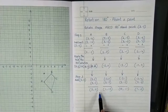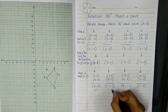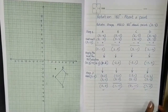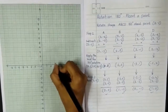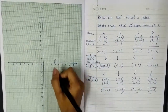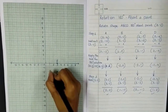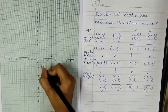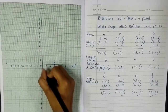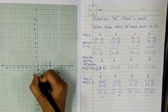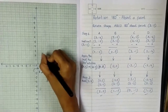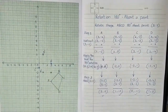Next, I have to plot all these points on a graph and then join them to make my rotated shape. I'll start plotting: (3, 0) is my point A dash; (1, -2) is my point B dash; (0, -1) on the y-axis is my point C dash; and (1, 2) is my point D dash. I'll join all of these points.